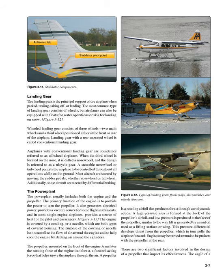The Powerplant. The powerplant usually includes both the engine and the propeller. The primary function of the engine is to provide the power to turn the propeller. It also generates electrical power, provides a vacuum source for some flight instruments, and in most single-engine airplanes, provides a source of heat for the pilot and passengers. The engine is covered by a cowling, or a nacelle, which are both types of covered housing. The purpose of the cowling or nacelle is to streamline the flow of air around the engine and to help cool the engine by ducting air around the cylinders.